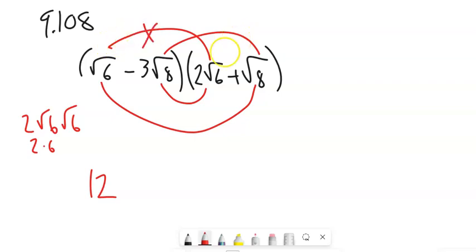So that first root 6 times root 8. Root 6 times root 8. That's going to be the square root of 48. And then I can break 48 up. Let's see what goes into 48. 16 times 3. So that would be 4 root 3. So I'm going to say plus 4 root 3.